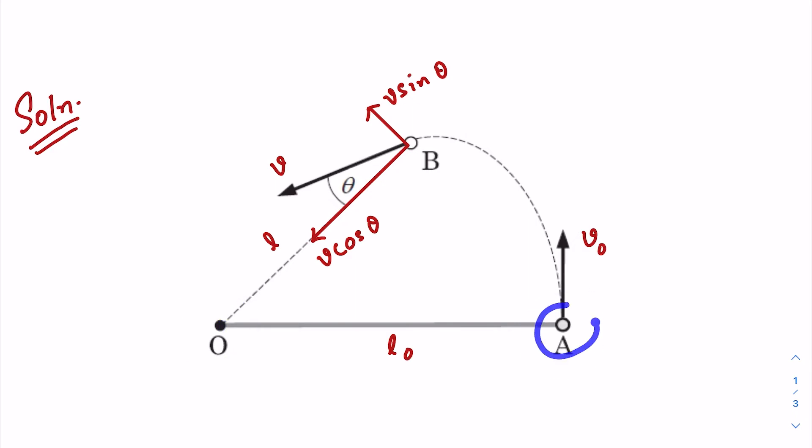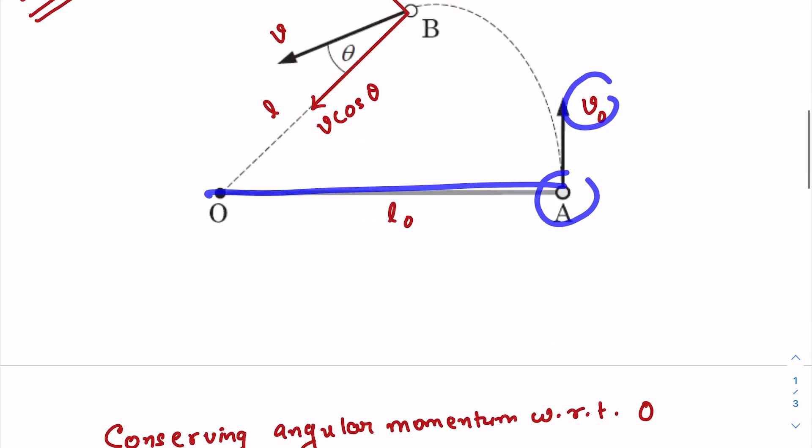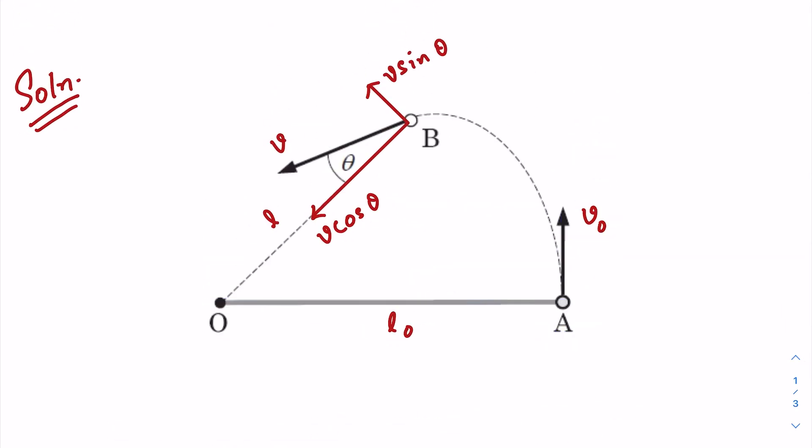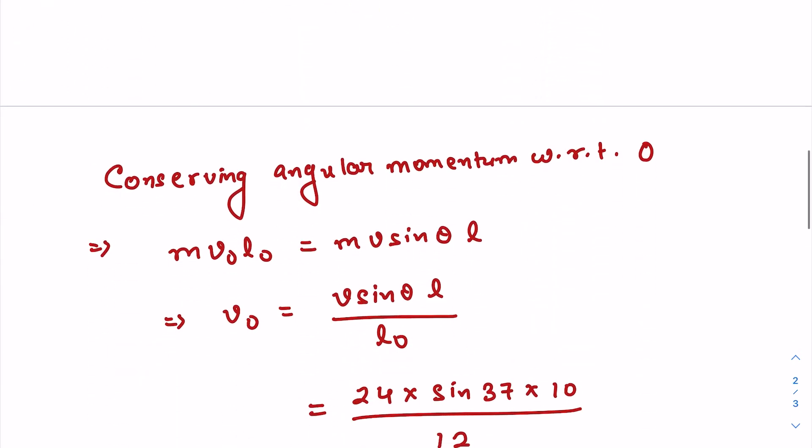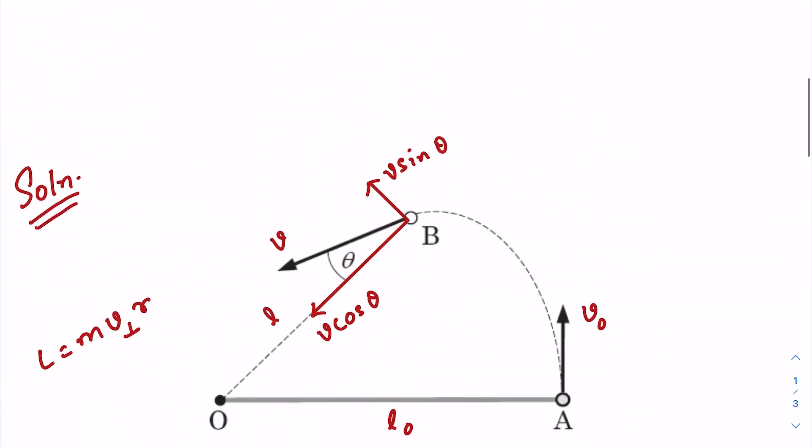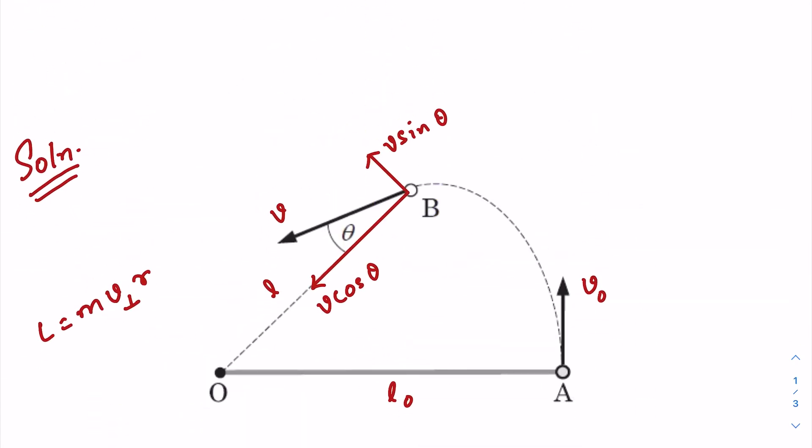At point A, what is angular momentum? The angular momentum formula is m times v perpendicular times r. At point A the angular momentum is m v₀ L₀. And at point B when the particle reaches there, the velocity is v...